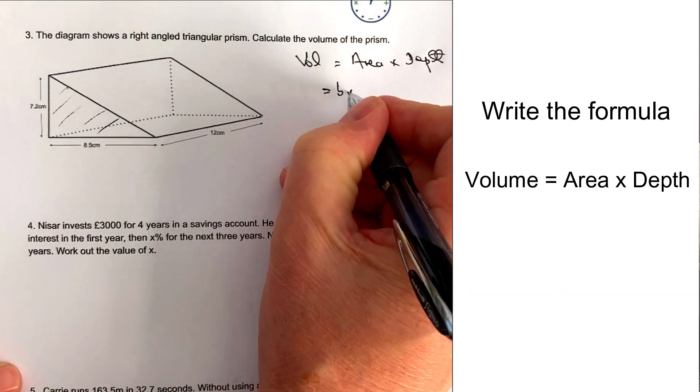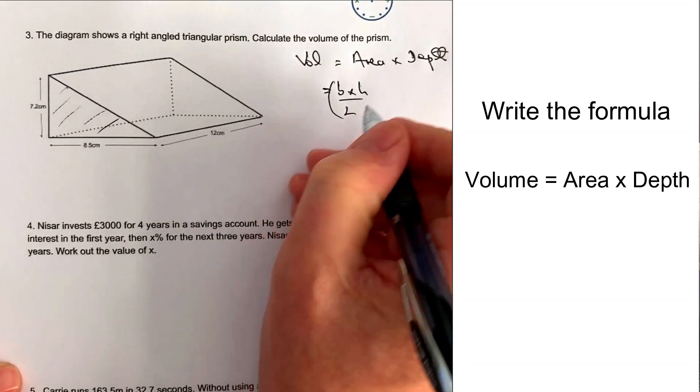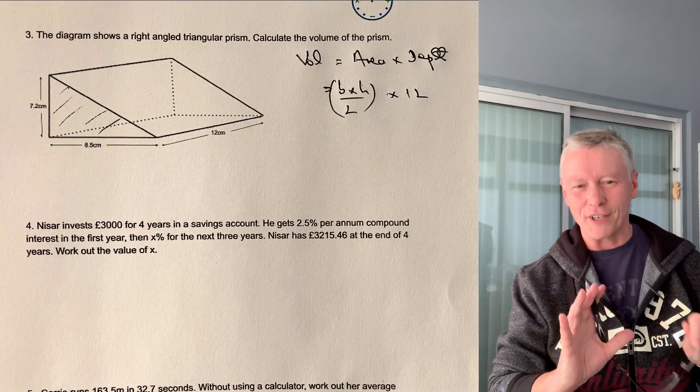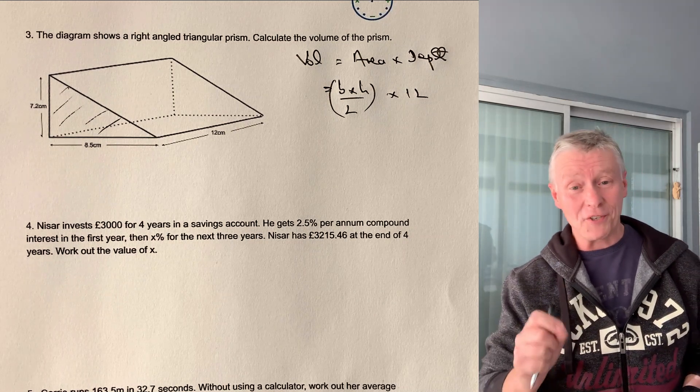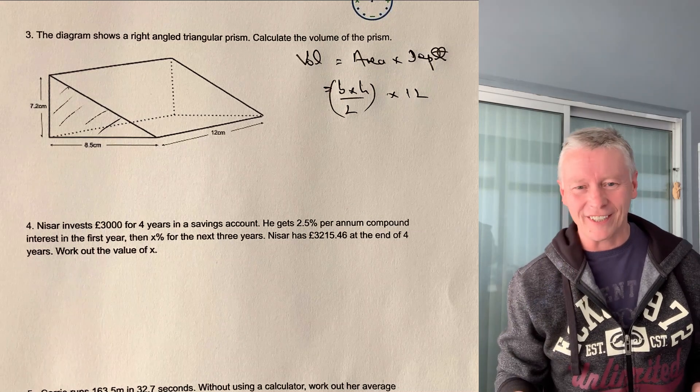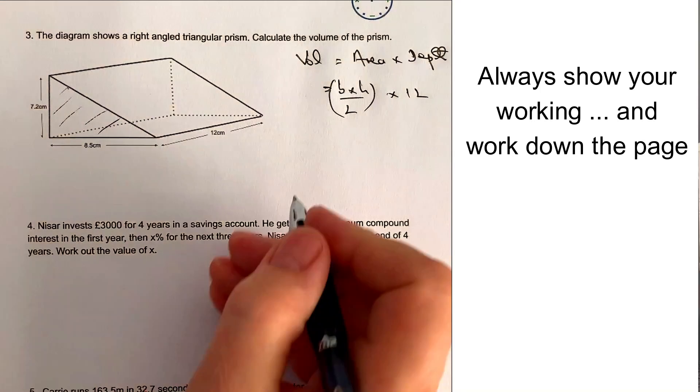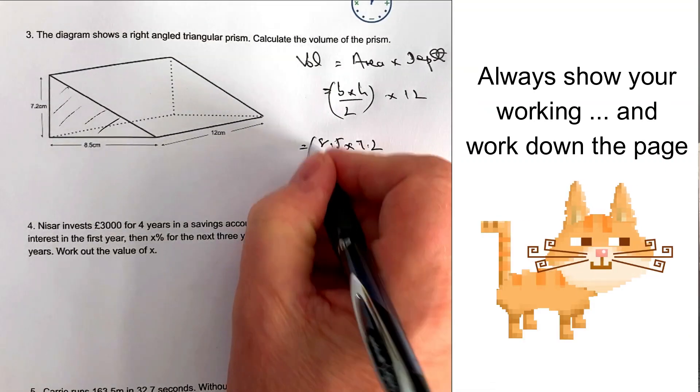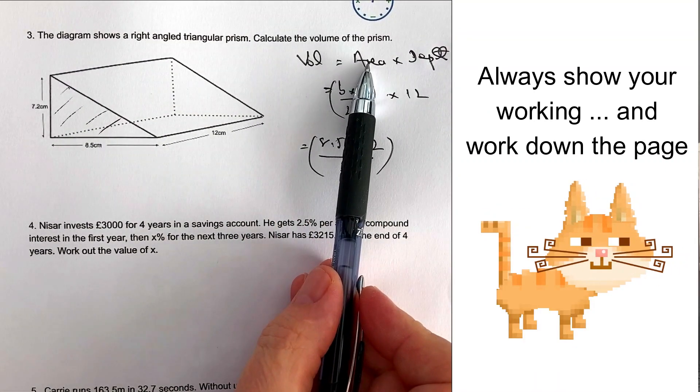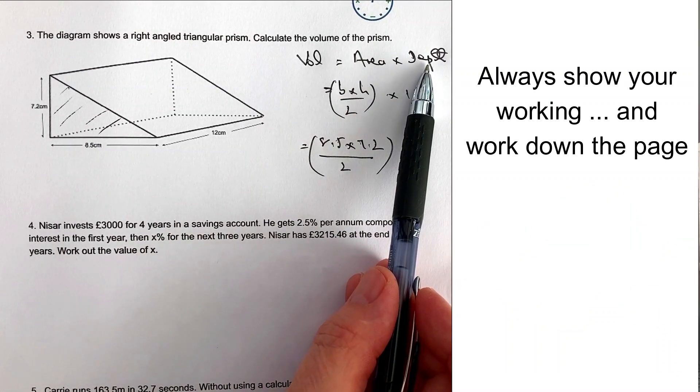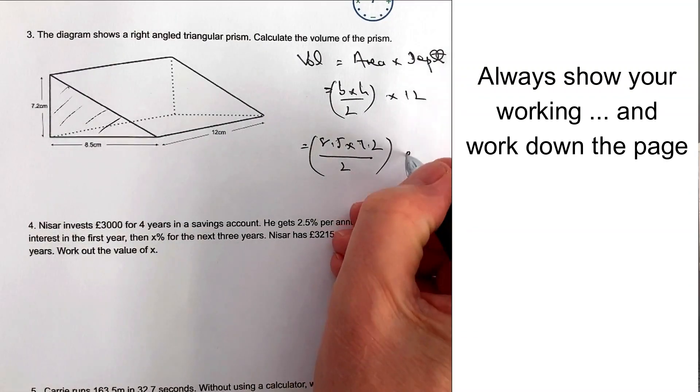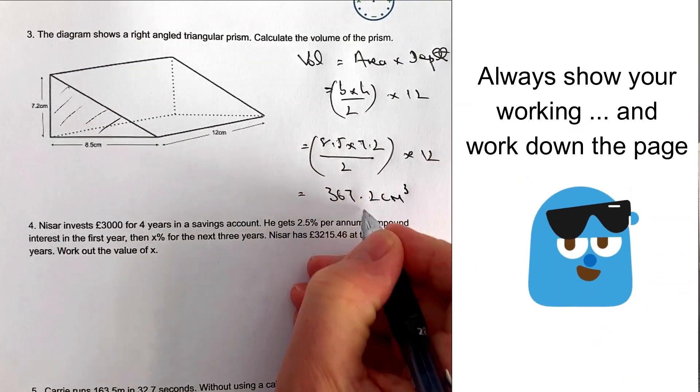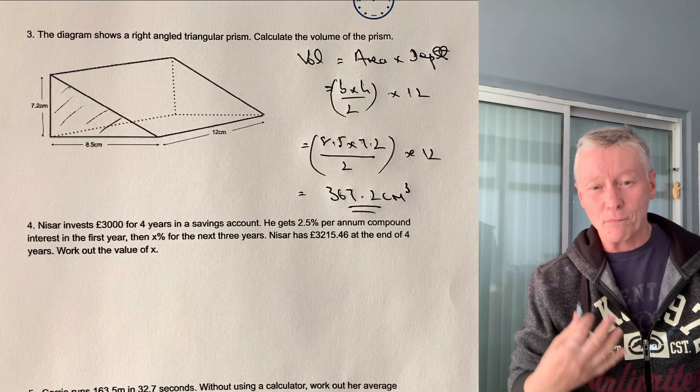Well, area of a triangle is usually base times height divided by 2. Some people will say it's a half base times height. And that's perfectly fine. There's sometimes slight differences in the way that formulas are being taught. However, providing it's base times height divided by 2 or a half base times height means exactly the same. So if we look at the diagram, then we've got a base of 8.5 and a height of 7.2. And we're going to divide that by 2. And I put it in brackets because that really is the area of the triangle. And we then need to multiply by the depth of the prism itself, which is 12. Put all that into a calculator and you should get 367.2. And remember, the units are centimetres cubed for the volume of the prism.